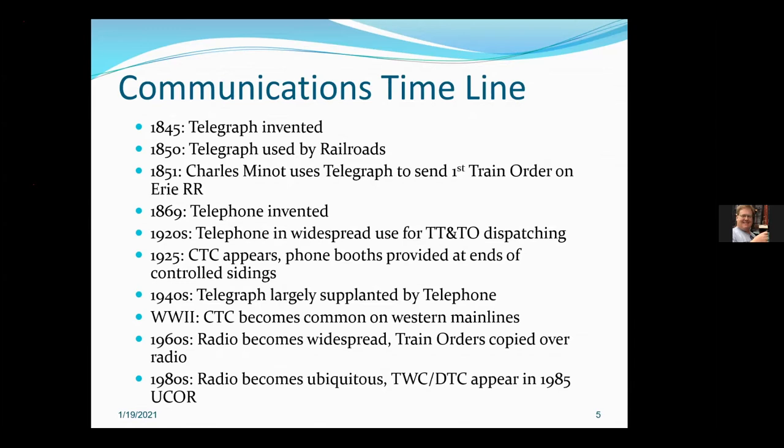In 1869, we have the telephone invented, a little serendipitously. The intent was really to have an appliance for the hearing impaired, but we ended up with the phone and that was good. By the 20s, the telephone is in widespread use for train dispatching, and the signaling publications of the era are full of glowing testimonials about how operations have been improved by implementing telephone.